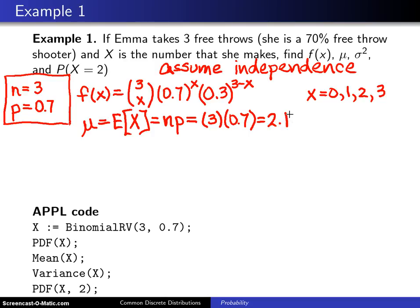So Emma can expect to make 2.1 free throws. Now, in any individual experiment, she'll take 3 free throws. She'll either make 0, 1, 2, or 3 in any experiment involving 3 free throws. But if she does that over and over again, she will average 2.1 free throws made in the long run.